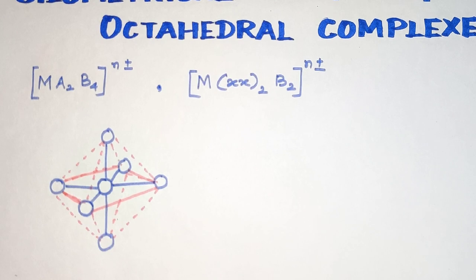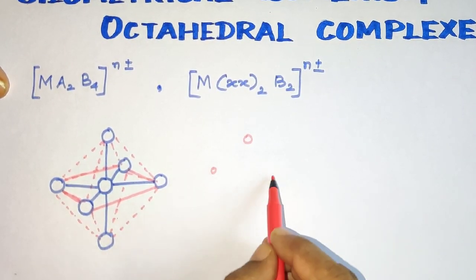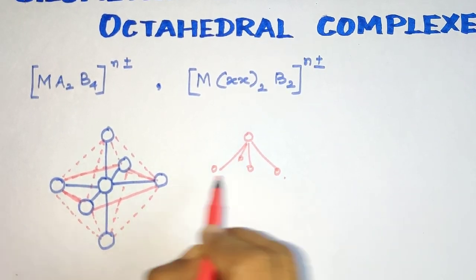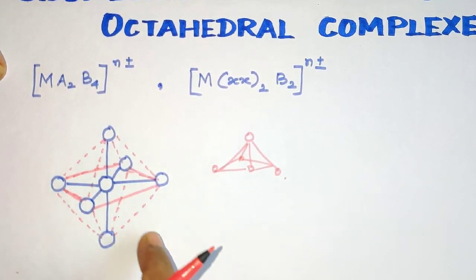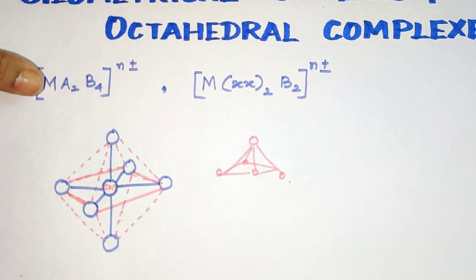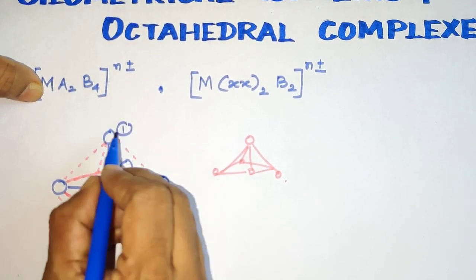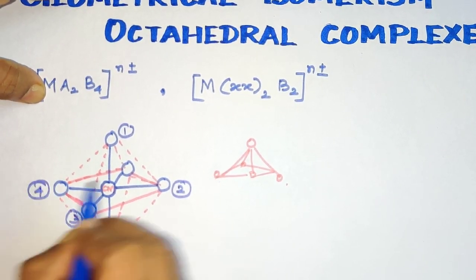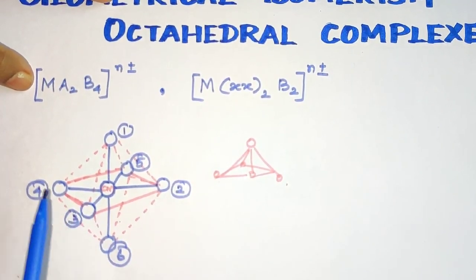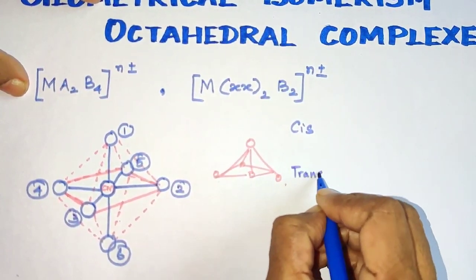Now this is the octahedral shape. It consists of two pyramid shapes connected together — one pyramid on top and one on the back, forming a triangular shape. We have a central metal atom in the middle. The ligands are numbered: ligand number one through ligand number six — one, two, three, four, five, six.